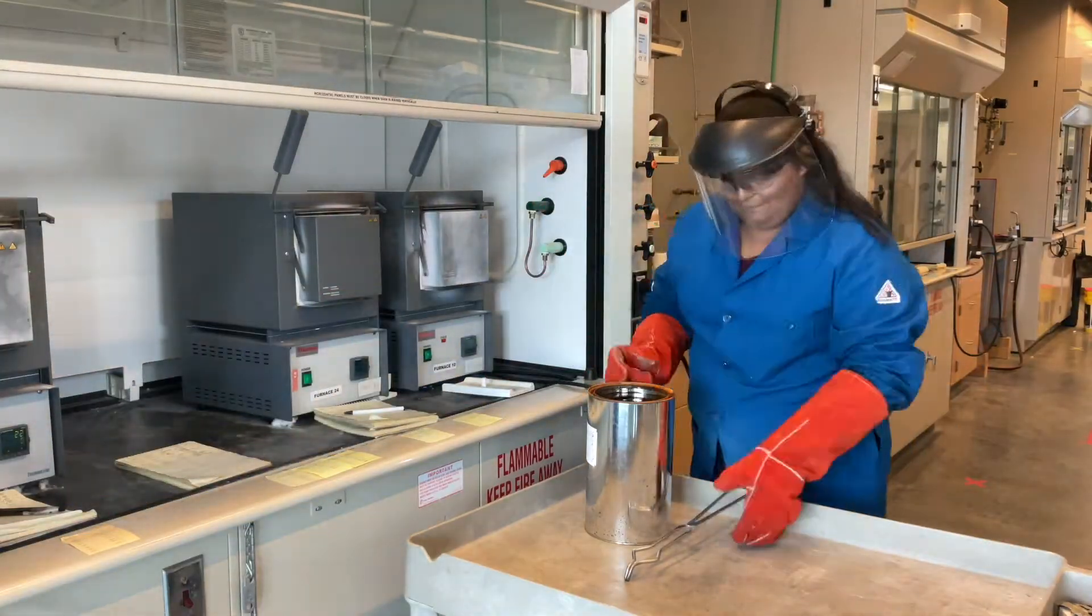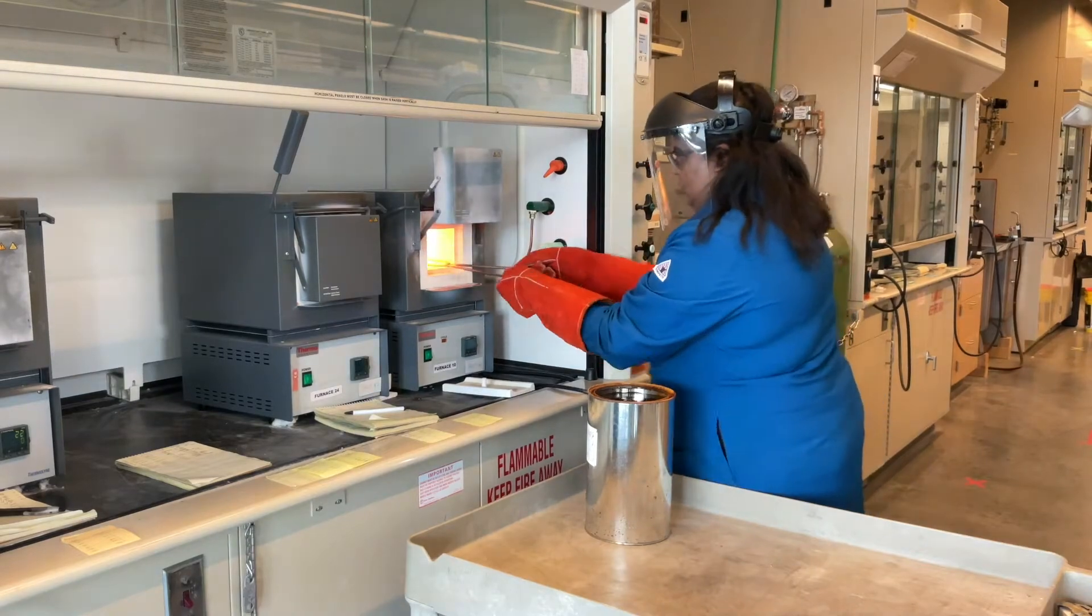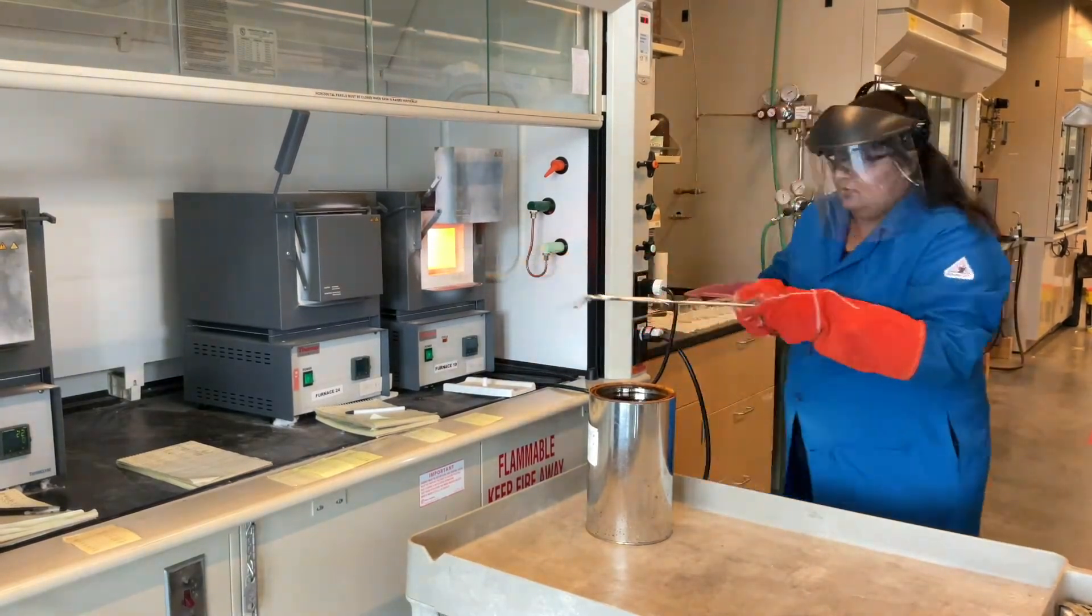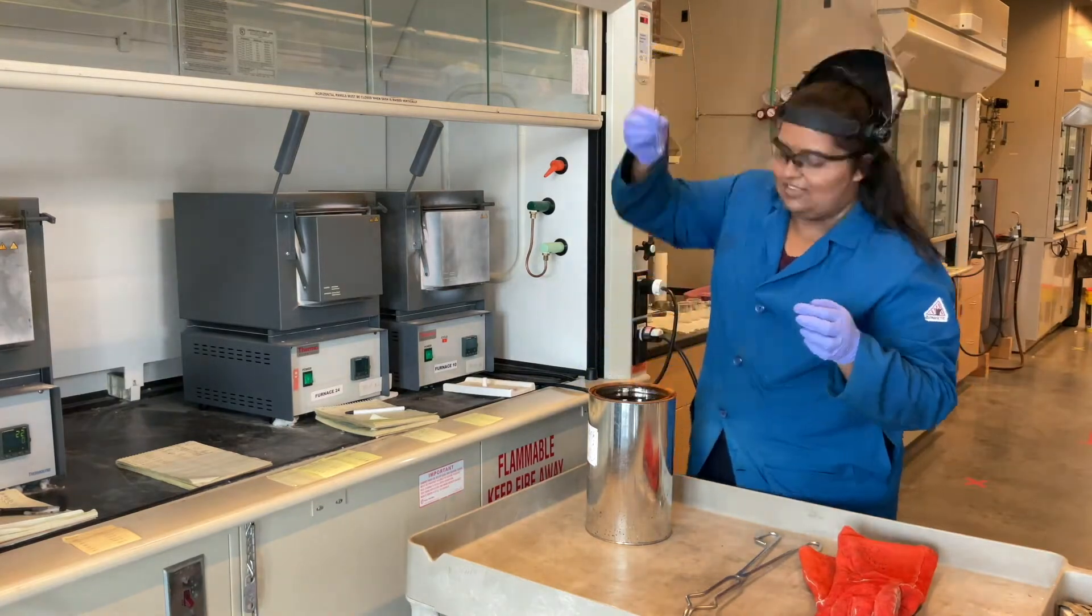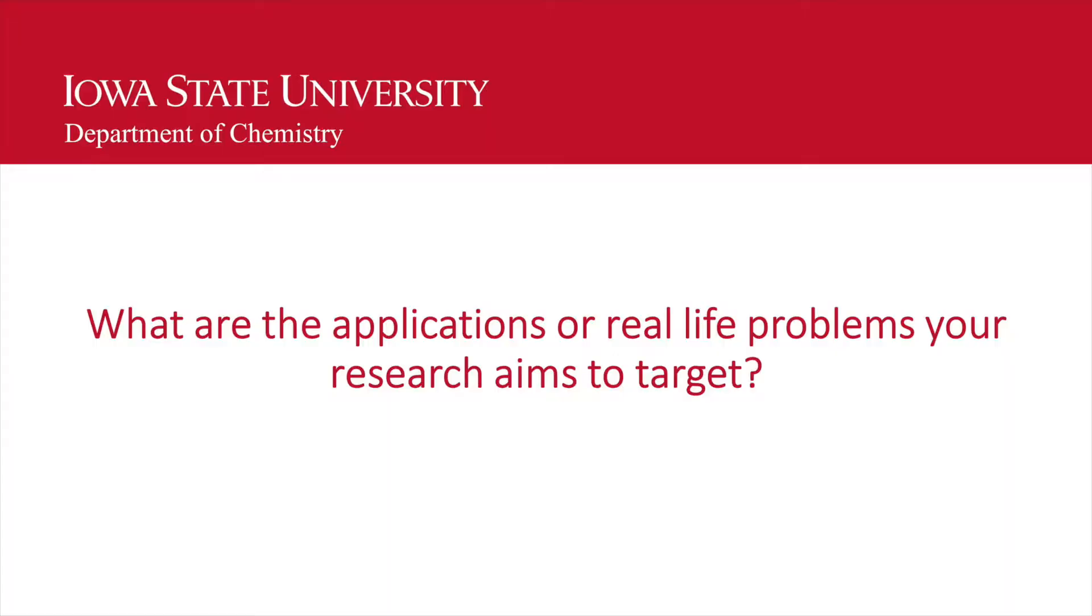I would say we do something like 75% experimental work and 25% theoretical work. We're using theoretical insight when we look for new materials. We're also using theory to analyze electronic structure and understand how we can optimize properties of materials, but it's mainly experimental.